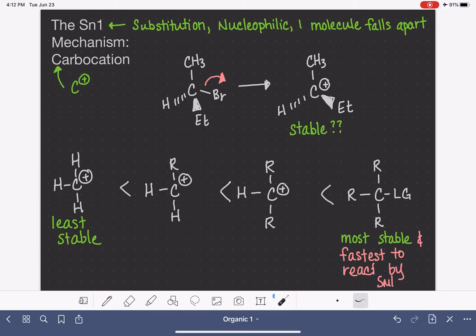That leaving group can fall right off, can leave us with a nice carbocation. It's very easy for this type of molecule to undergo the first step. If we have two alkyl groups and one hydrogen, and then we've got a leaving group on here, that leaving group can fall off pretty easily as well and form a nice secondary carbocation. And so again, this reacts well.